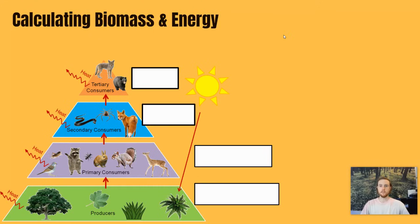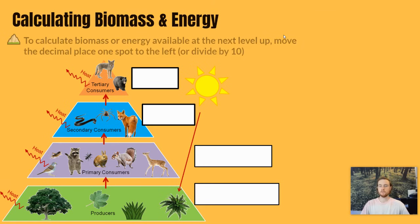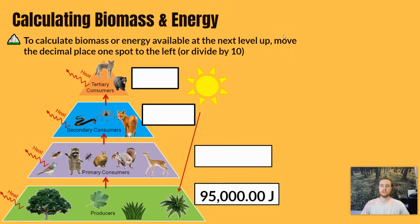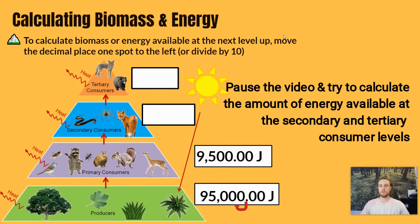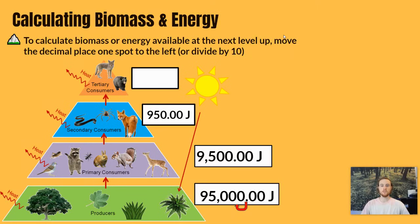Now we'll practice calculating the amount of energy available at different levels. To calculate the energy available at the next trophic level up, you just move the decimal spot one place to the left, or divide by 10. If we have 95,000 joules at the producer level, we move the decimal one spot to the left to get 9,500 joules available to the primary consumers. At the secondary consumer level we'd expect 950 joules, and then only about 95 joules available at the tertiary consumer level.